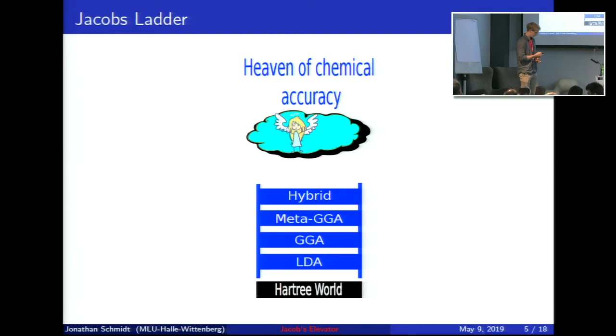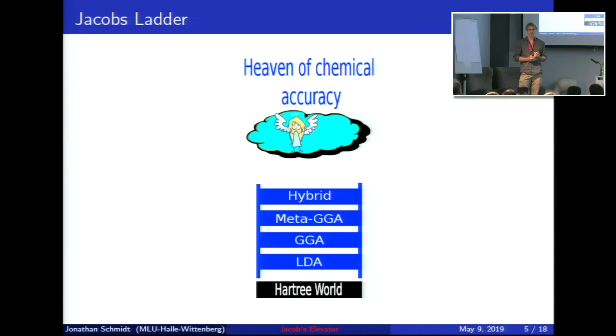Traditionally we have Jacob's ladder, where a long time ago people were living in the dark. Then we got the local density approximation as the first rung of the ladder, and a lot of solid-state physicists are still living at this level. Then we have more non-local functionals that are more accurate, especially hybrids, but they also scale poorly for larger systems, limiting the size and number of systems we can actually run.